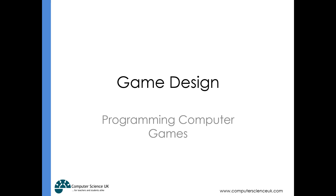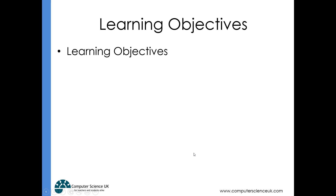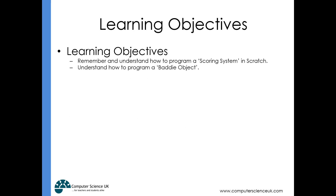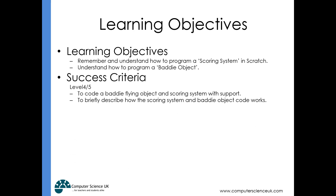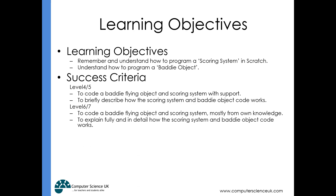This is the third Year 9 game design lesson. Today I want us to remember how to create a scoring system in Scratch - something you would have done in Year 7 or Year 8. I also want us to understand how to program a baddie object in our scrolling game: fire a bullet at the baddie, the baddie disappears, the score goes up by one, and the baddie reappears at a random location on the right-hand side of the screen.